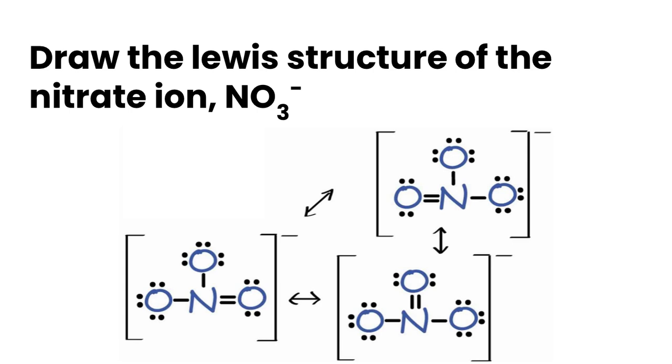So let's start off with the Lewis structure of the nitrate ion NO3 minus and if you recall from previous videos the resonance structure for the nitrate ion can be drawn with three possible configurations. These are based on where the double bond is located so it could be here or here or here.